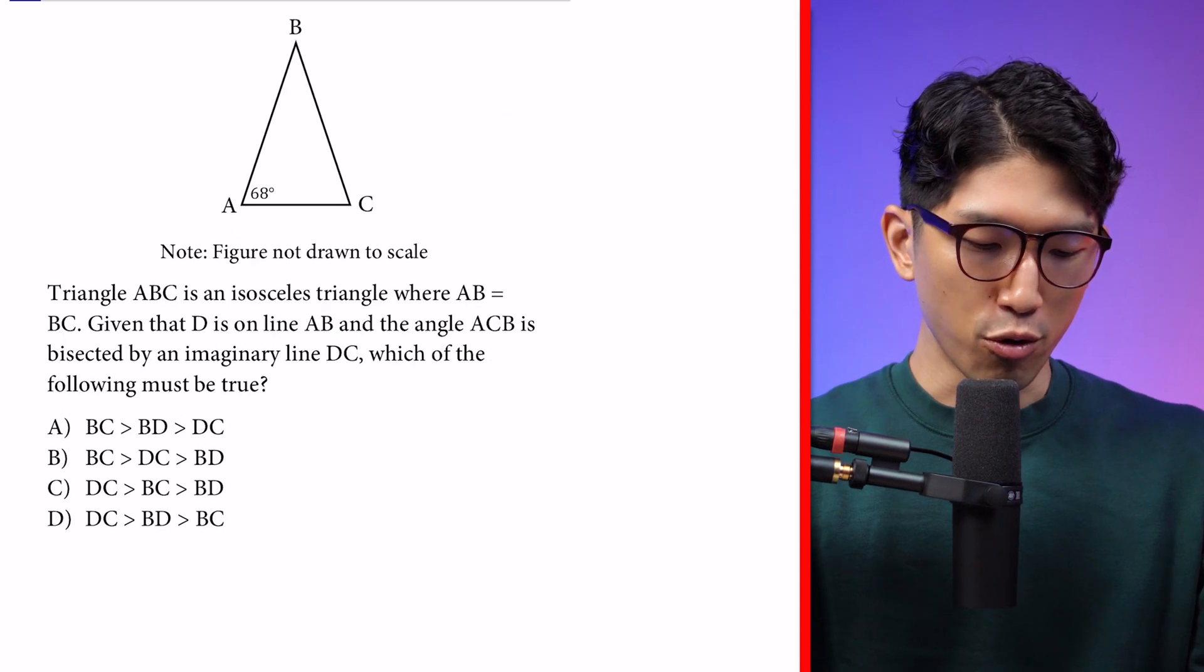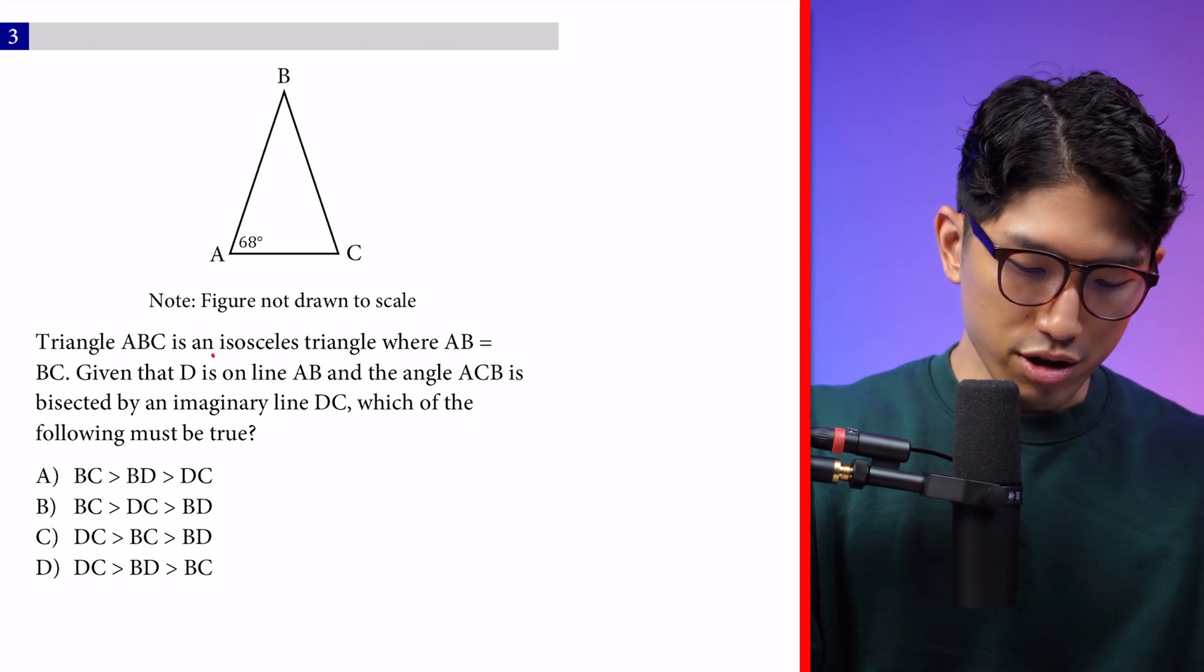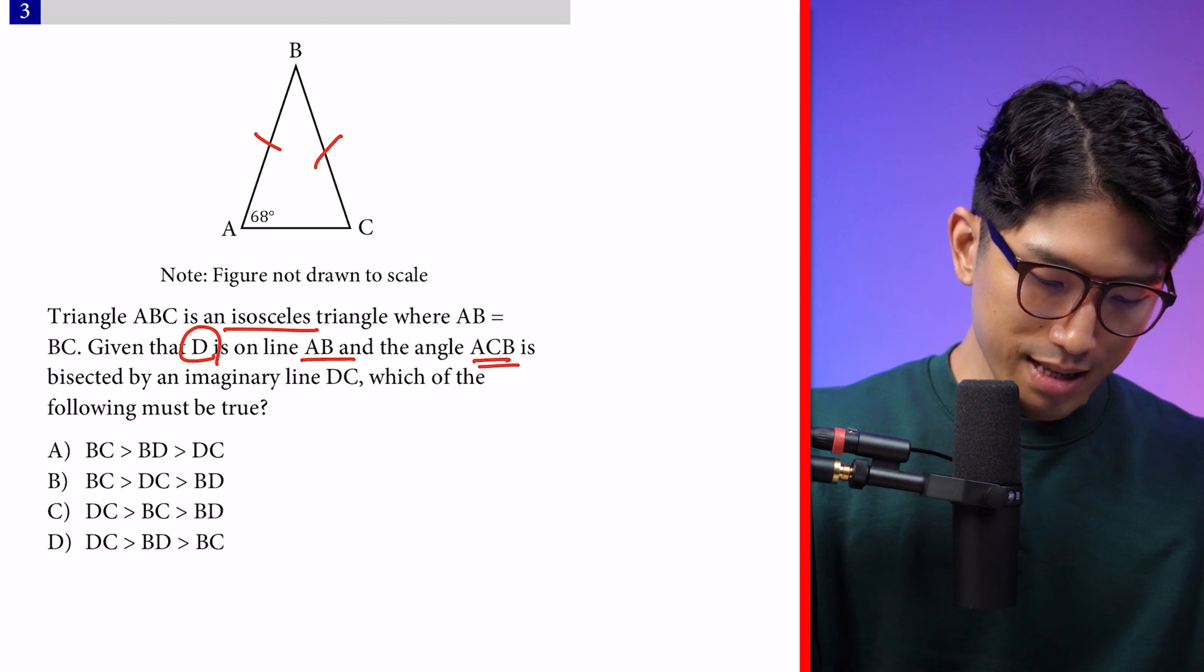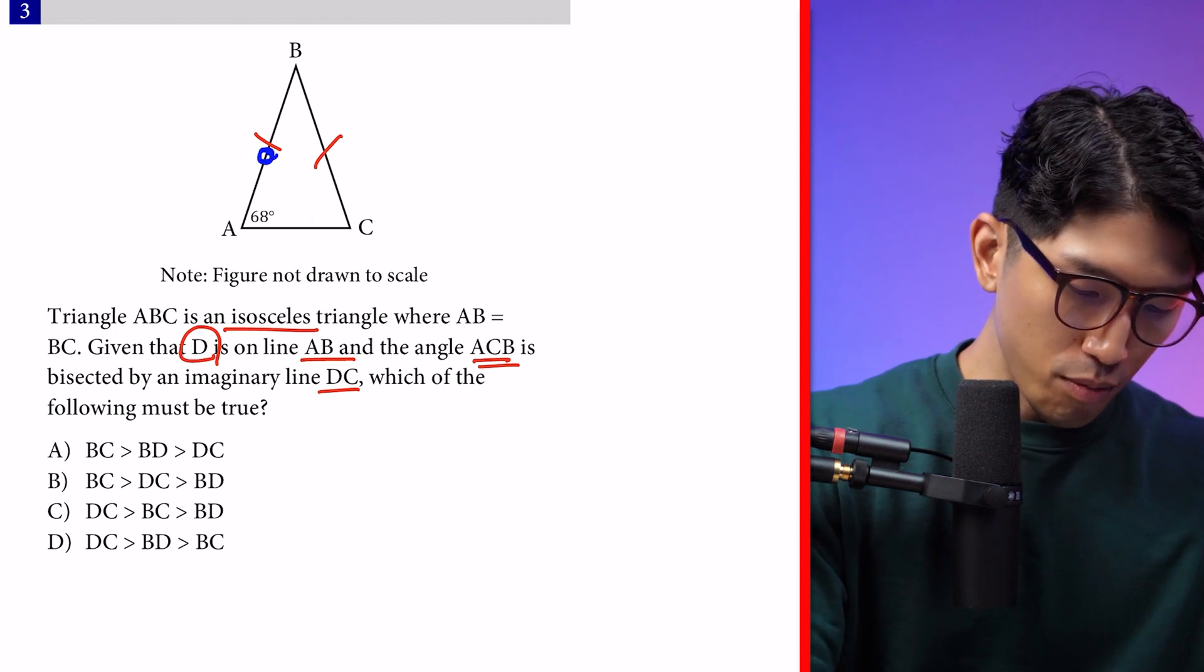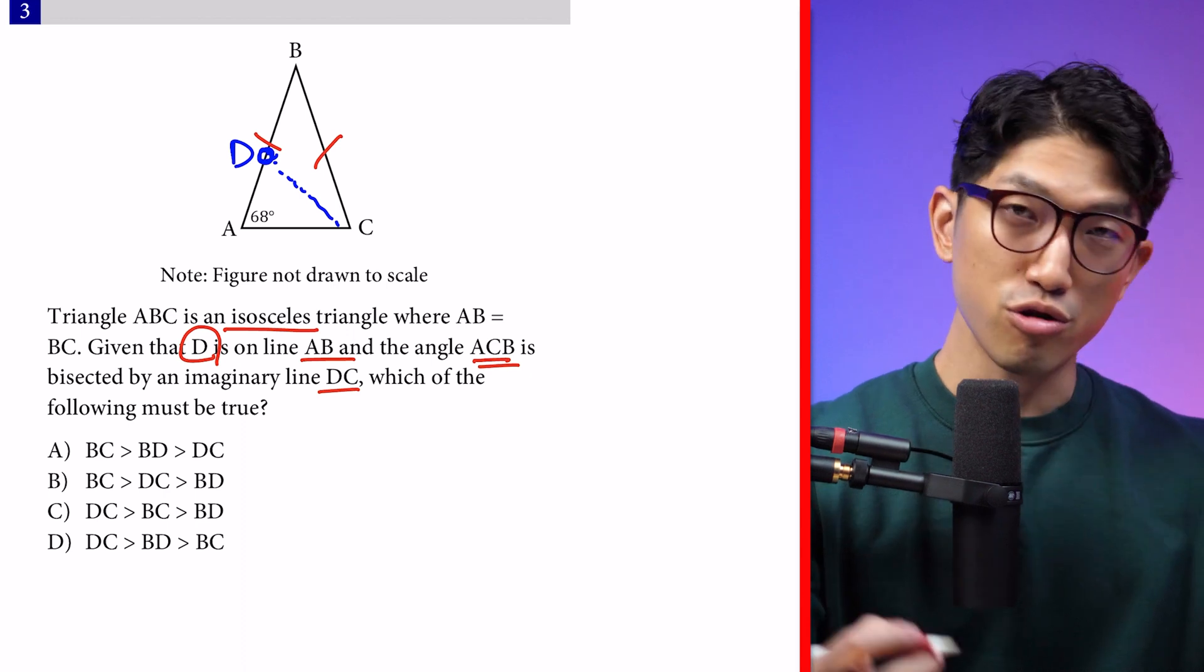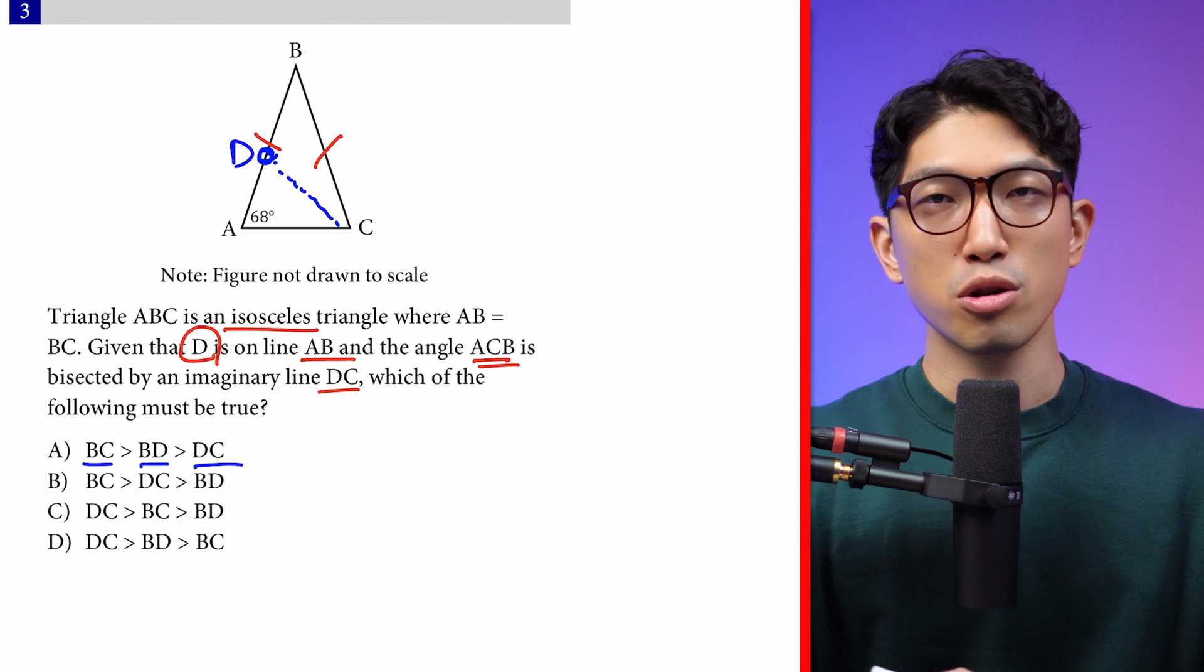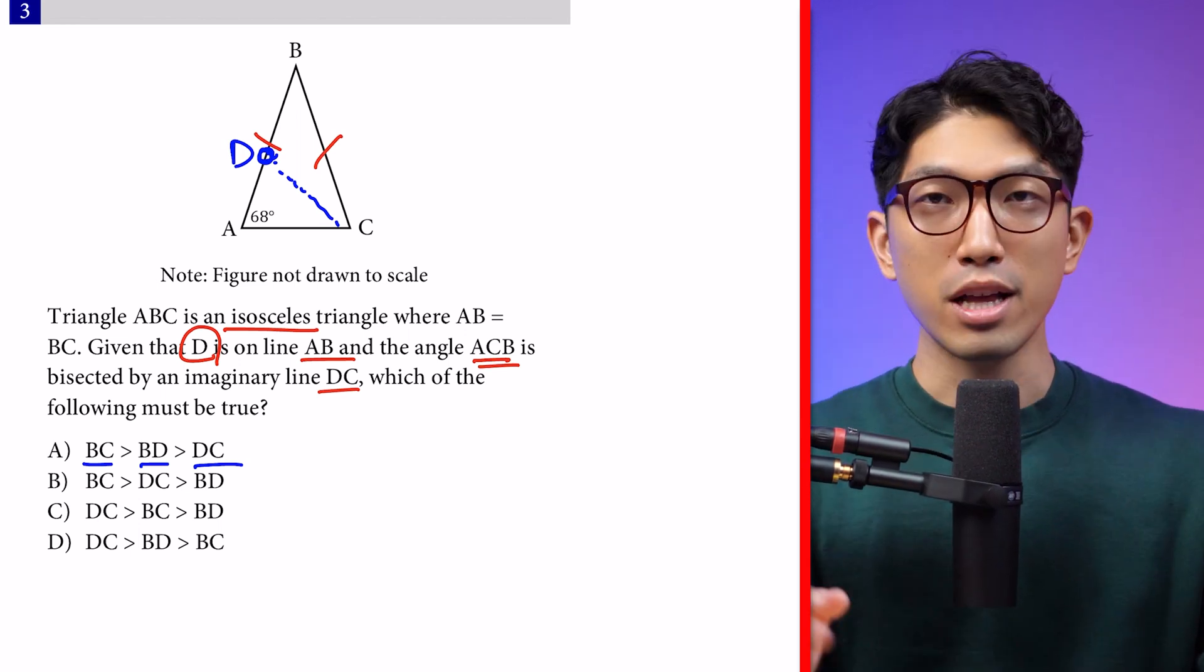It was pretty easy. You can fly through knowing what isosceles triangles are. Let's move on to a more difficult version testing the same concept but harder. The question says: Triangle ABC is an isosceles triangle where AB equals BC. Given that D is on line AB and angle ACB is bisected by imaginary line DC, which of the following must be true? We have imaginary point D there, and it separates angle ACB into two equal pieces. It bisects it. Based on this information, we need to find the relationship between these three side lengths, which one's longest, which one's shortest. This is one of those questions you either know it or you don't. It all comes down to having the right concepts in place. Pay attention for the next 30 seconds.